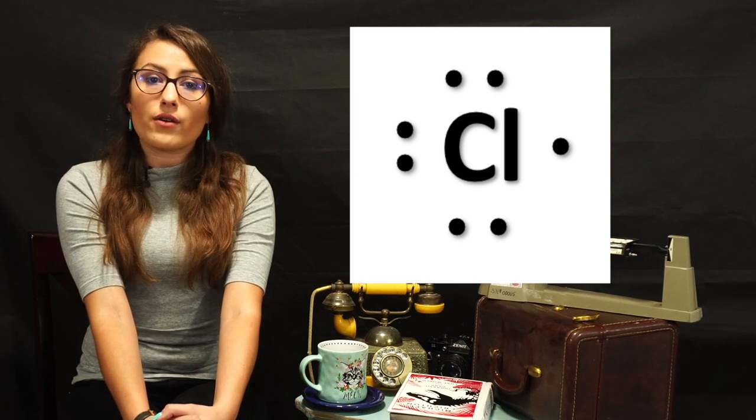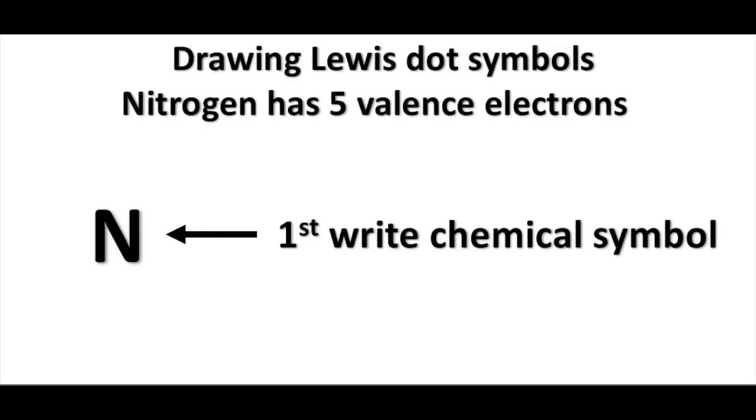In order to write a Lewis diagram, you first start out by writing the chemical symbol. Let's do this for nitrogen, which is denoted as N. Nitrogen has five valence electrons. When placing the dots around the atomic symbol, you place them individually before pairing, keeping in mind a maximum of two dots per side.